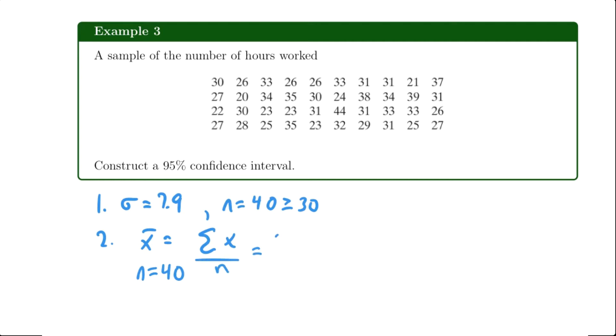So that's going to be 30 plus 26 plus 33, 26 and so on all the way to that last number of 27, and then divide by 40. When I do that I'm going to get a mean of 29.6.